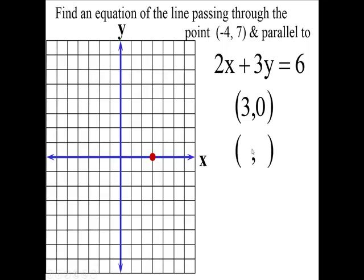Another easy point is when x is 0. So that zeros this out. What's 2 times 0? 0 plus 3y equals 6. 3y equals 6. y must be 2. So here's a point called the y-intercept.